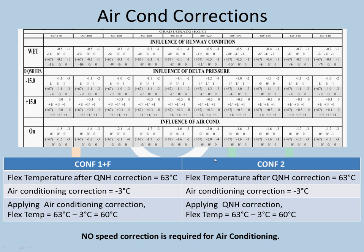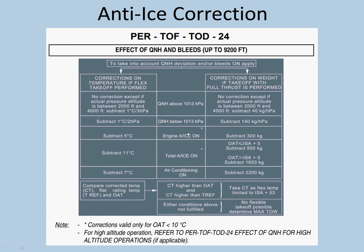For anti-ice: the chart is made for anti-ice off, but the question has engine anti-ice on. This correction is found in the FCOM, performance takeoff data 24. Up to 9200 feet elevation (applicable here at sea level): engine anti-ice on requires subtracting 5 degrees — but only when OAT is less than 10 degrees. Since OAT was 25, we do not subtract any temperature. No anti-ice correction is applied.